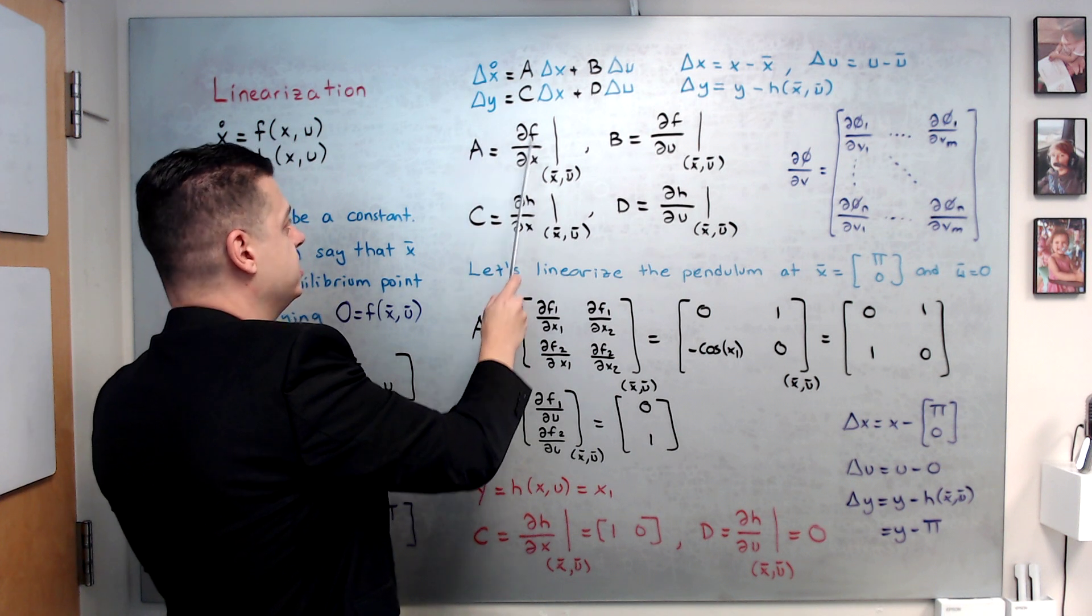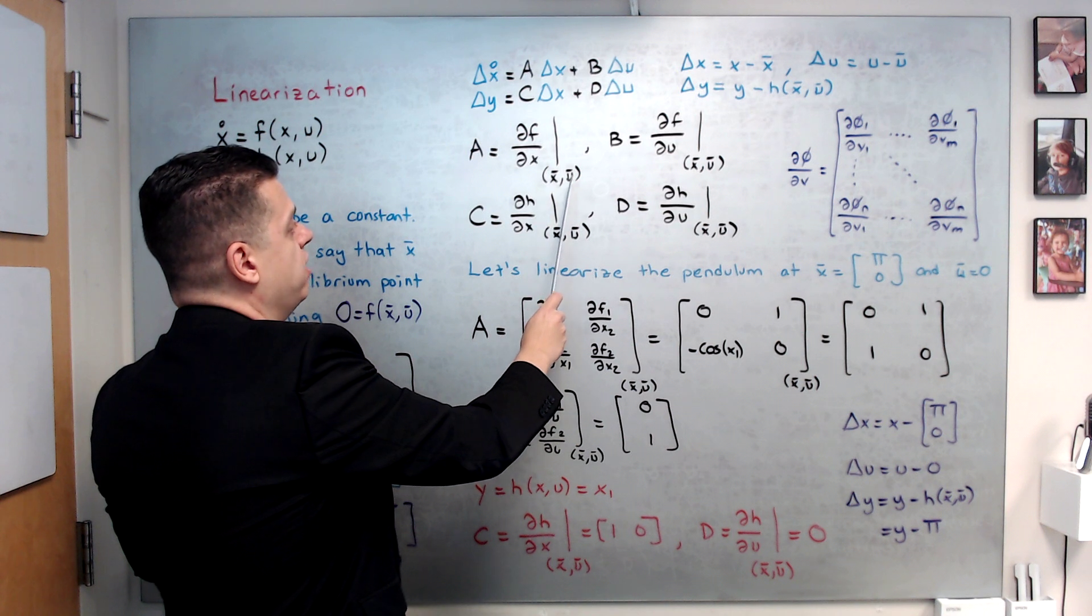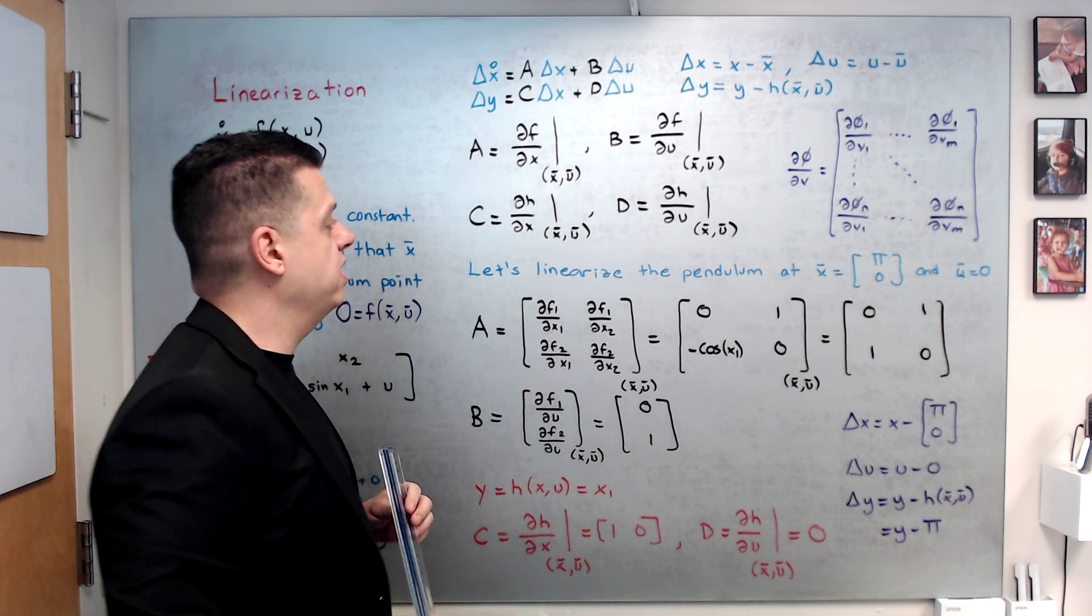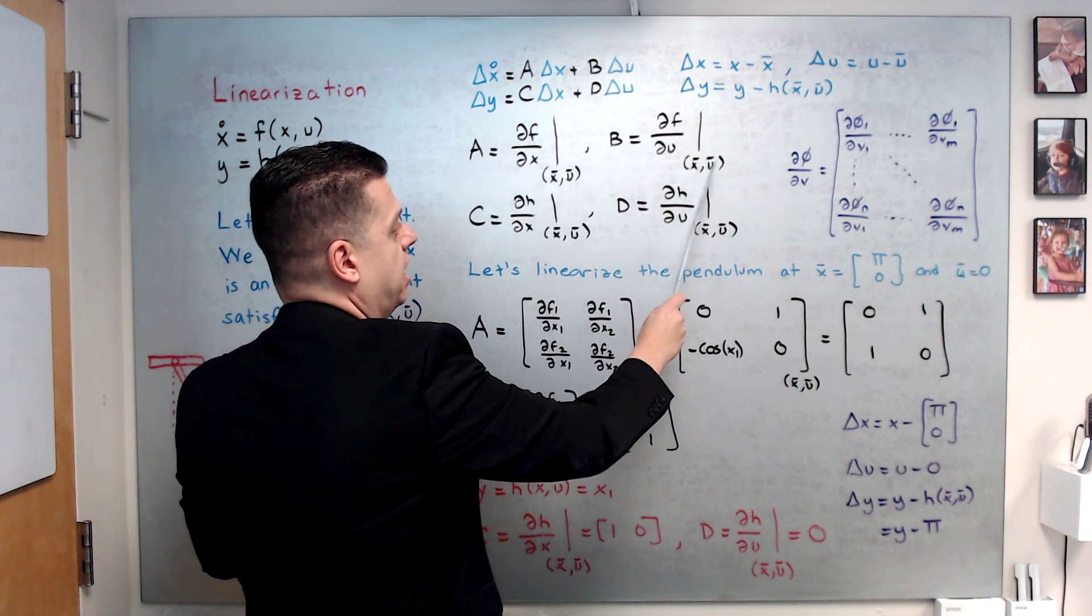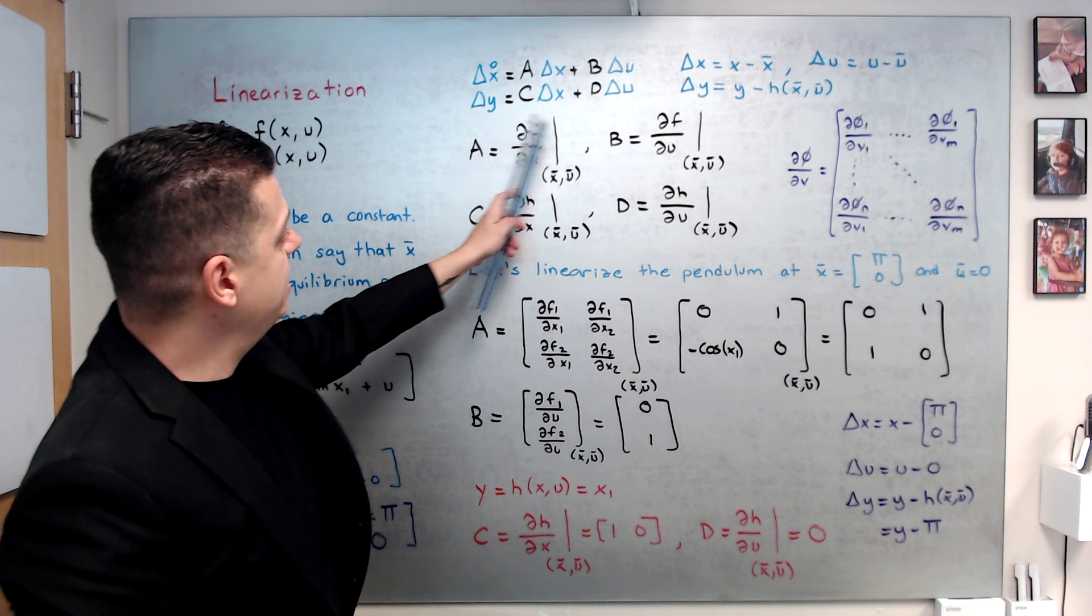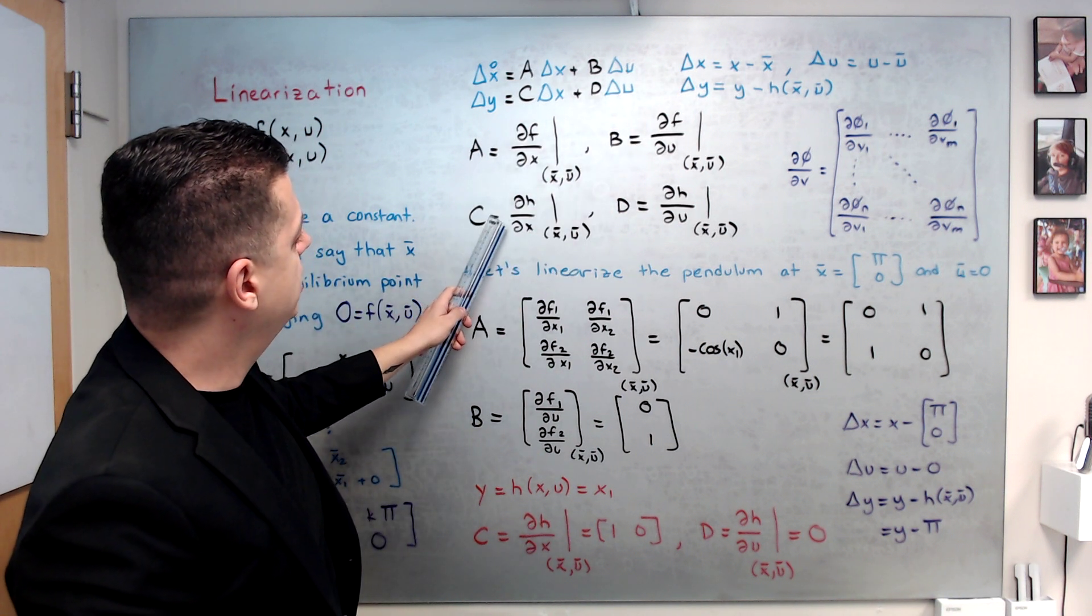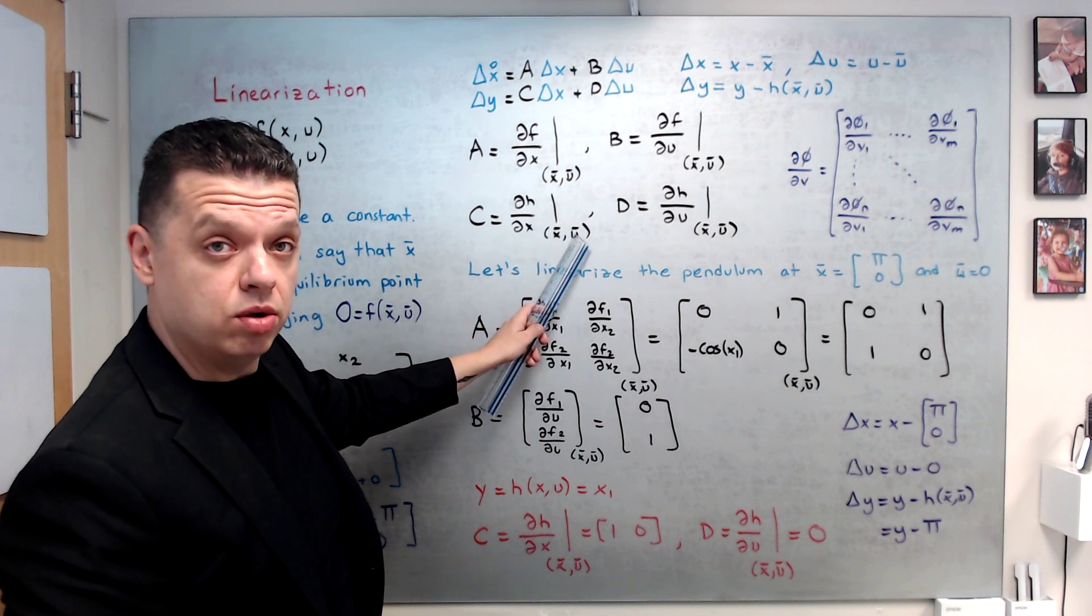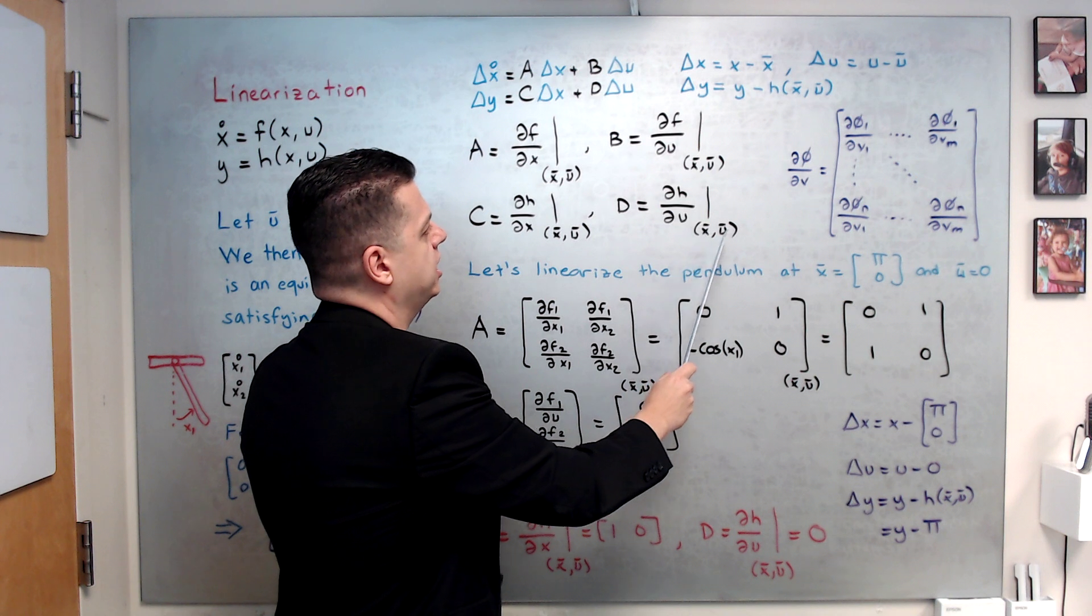So, a matrix is basically df over dx, evaluated at x bar and u bar on the equilibrium point that it rests. b is df over du, again, on this equilibrium point. Likewise, for c, we are using not f, but h, the output equation, dh over dx, evaluated at x bar and u bar, and d is dh over du, evaluated at x bar and u bar.